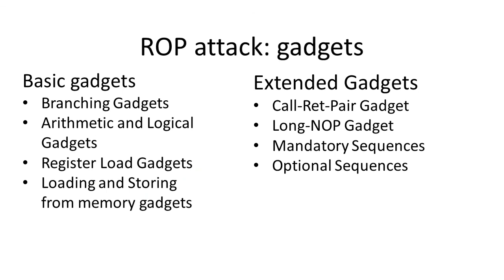Even a combination of all these coarse-grained CFI policies still allows for a ROP attack to take place. What you can see here is a summary of gadgets constructed on a state-of-the-art coarse-grained CFI-protected Windows kernel, specifically engineered to bypass the defenses. Although the performance boost of coarse-grained CFI might sound tempting, in the end fine-grained CFI is still required to achieve reliable security.